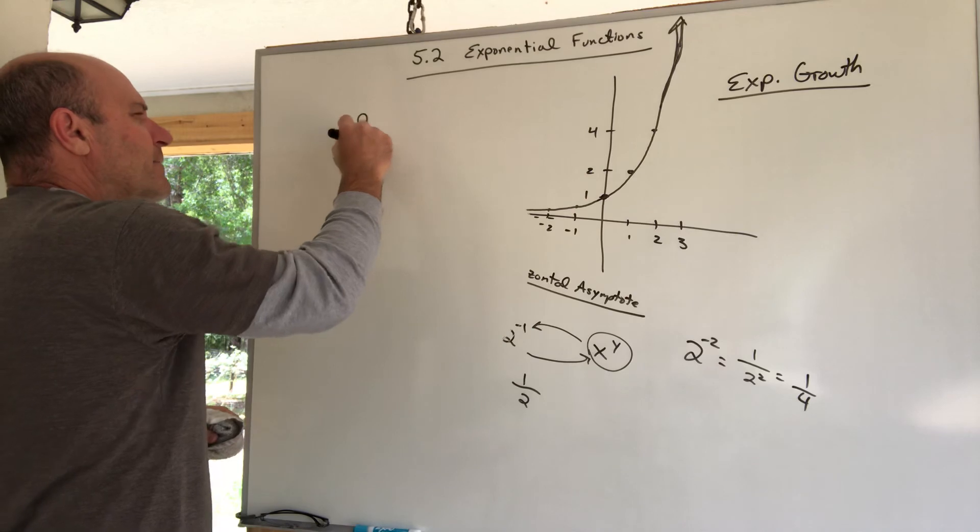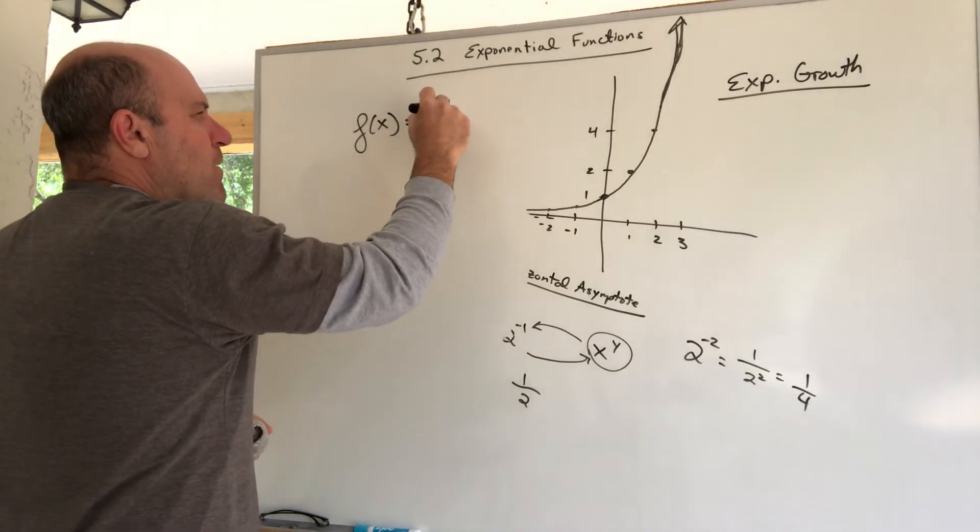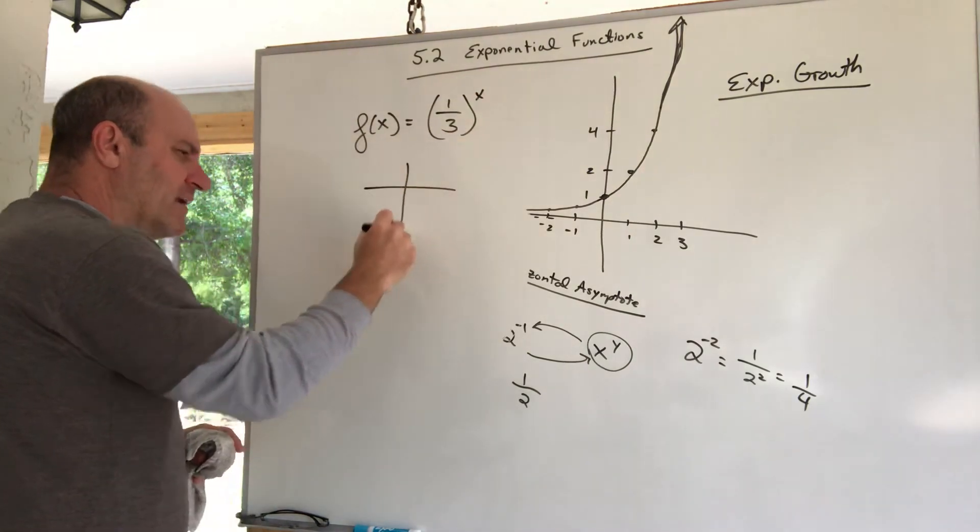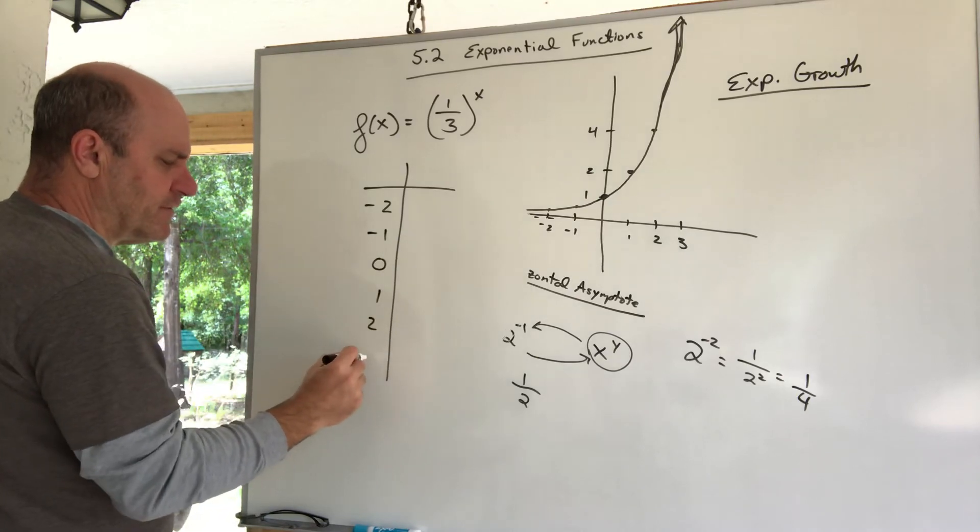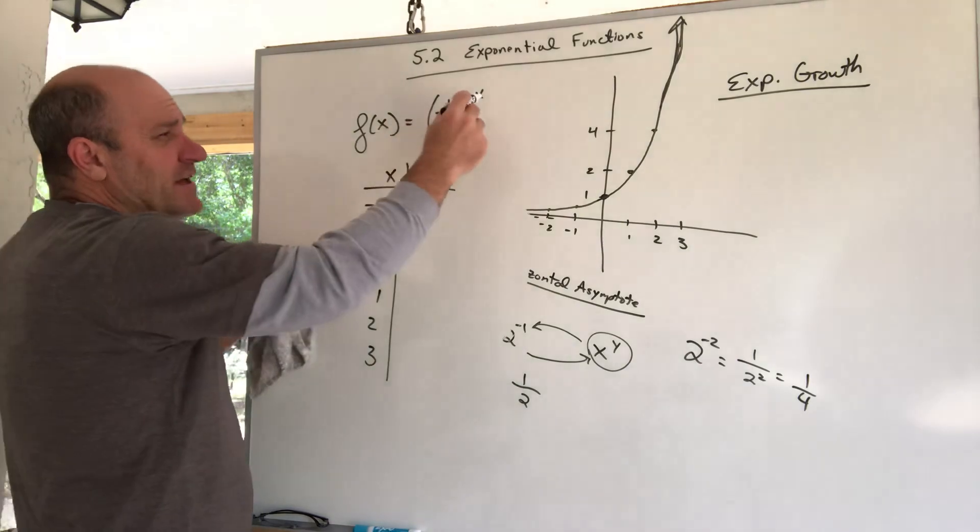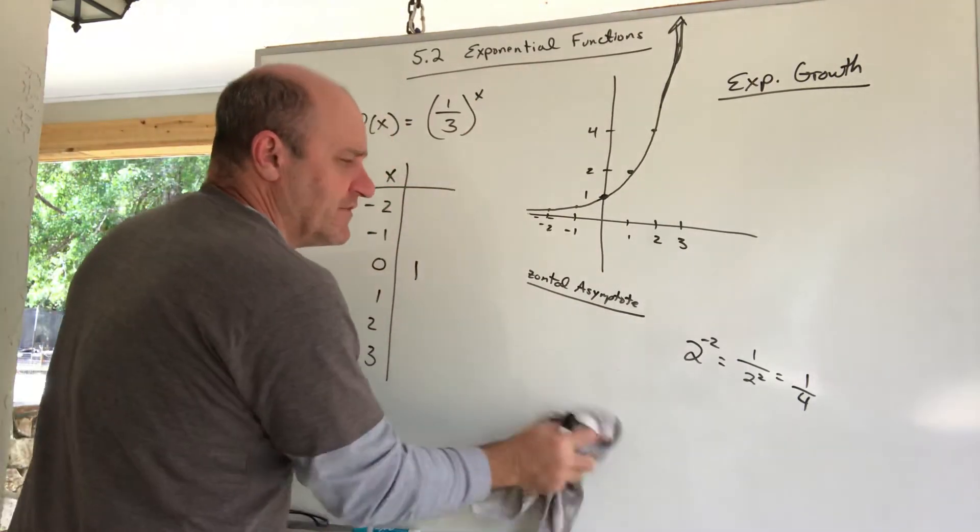I'm going to look at f of x equals one third to the x. So if I made a little chart: negative two, negative one, zero, one, two, three. Let's start with zero. Plug in a zero. What's anything to the zero? It's a one.